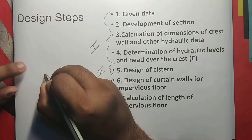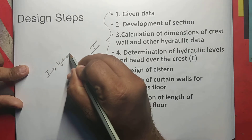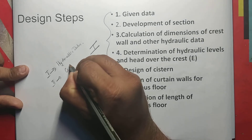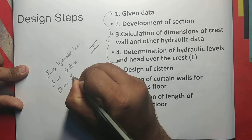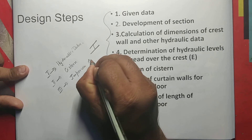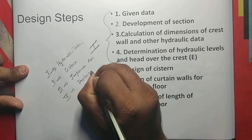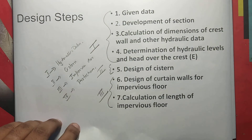The first thing is hydraulic data. The second thing is the system. The third thing is impervious floor. The fourth thing is protection works. We have all the components and blocks that are required. We have to divide this into four steps: the first step is hydraulic data, the second step is to restore the system, and the third step is the impervious floor to restore the protection.